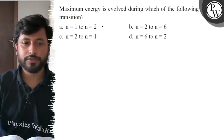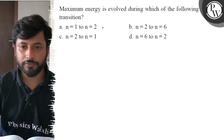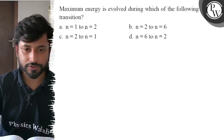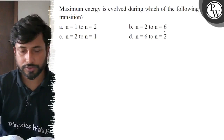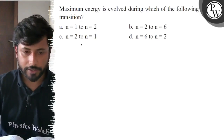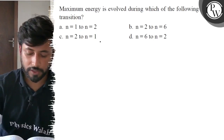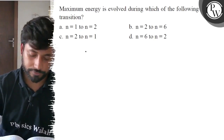Hello, let us see this question. Maximum energy is evolved during which of the following transitions? n equals to 1 to n equals to 2, n equals to 2 to n equals to 6, n equals to 2 to n equals to 1, n equals to 6 to n equals to 2.